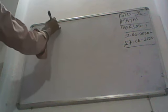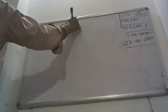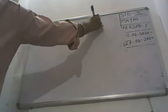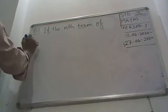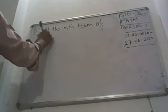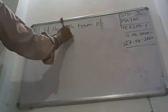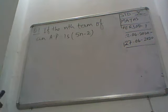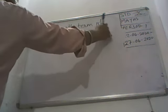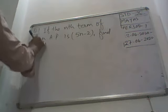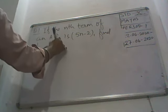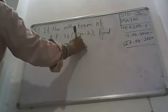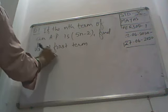One question I am taking here. They are saying that if the Nth term of an AP is 5N minus 2, find its number one, first term; number two, common difference.